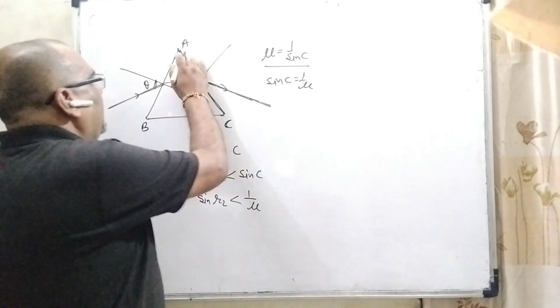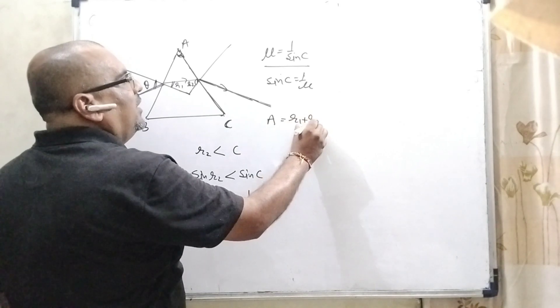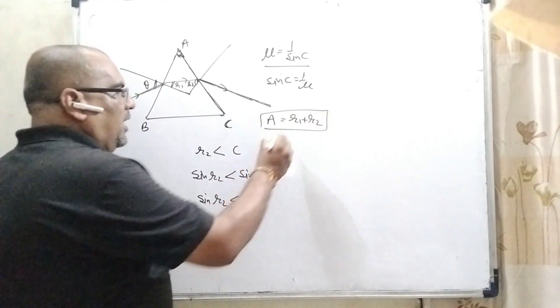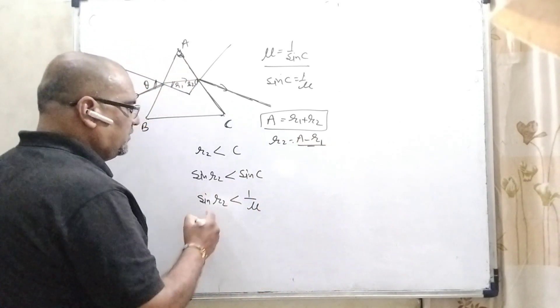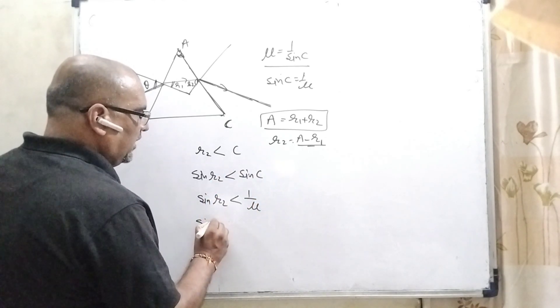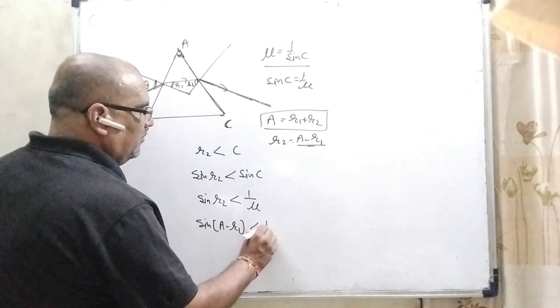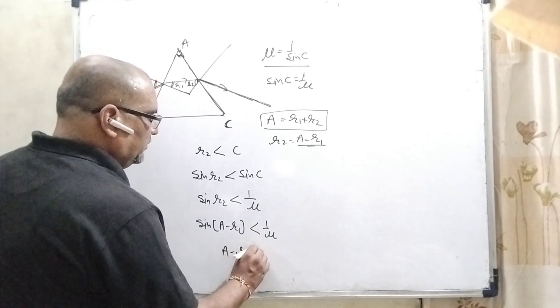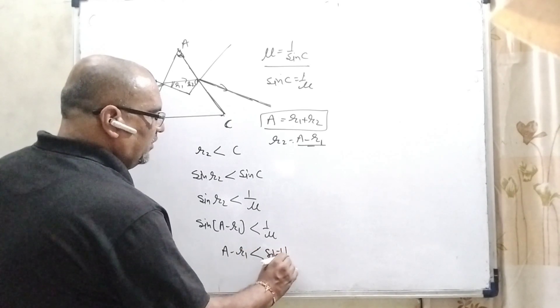Now, for the relation of this prism angle that is A equals to R1 plus R2. So here R2 can be written as A minus R1. So now substitute this value. Sin in the place of R2 can be written as A minus R1 less than 1 by mu.